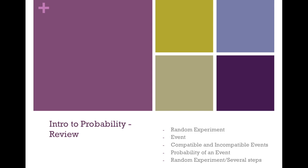To begin this chapter on probability, we are going to review a few things that you may have seen before, including what a random experiment is, what an event is, compatible and incompatible events, the probability of an event, and what a random experiment is in several steps.